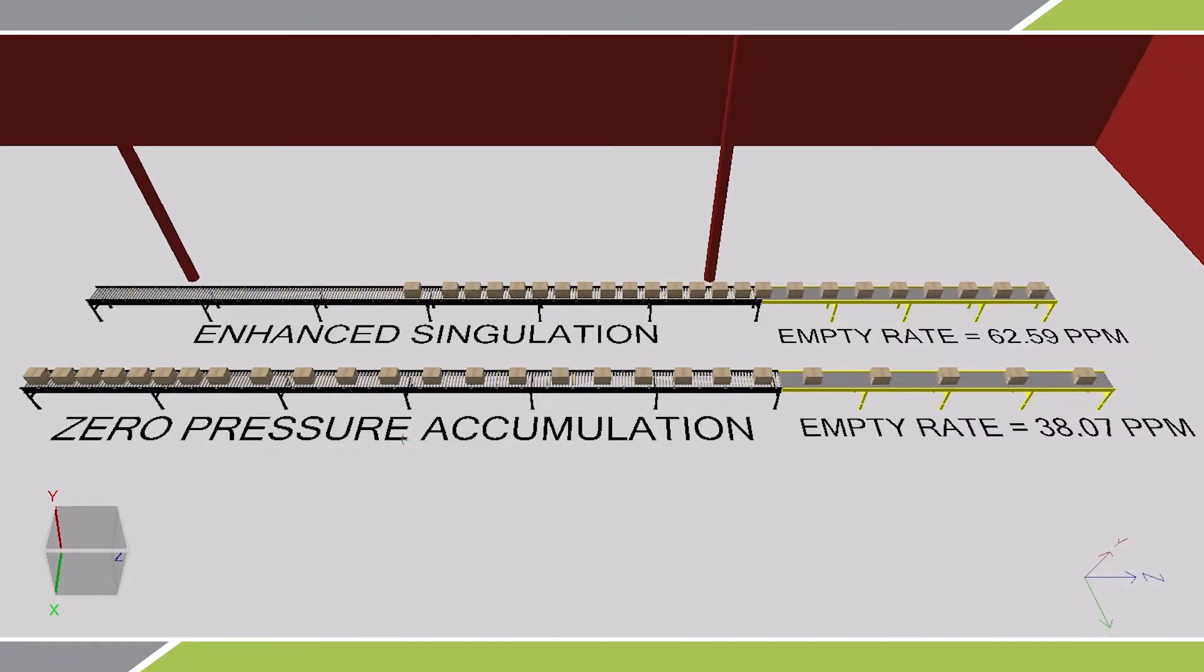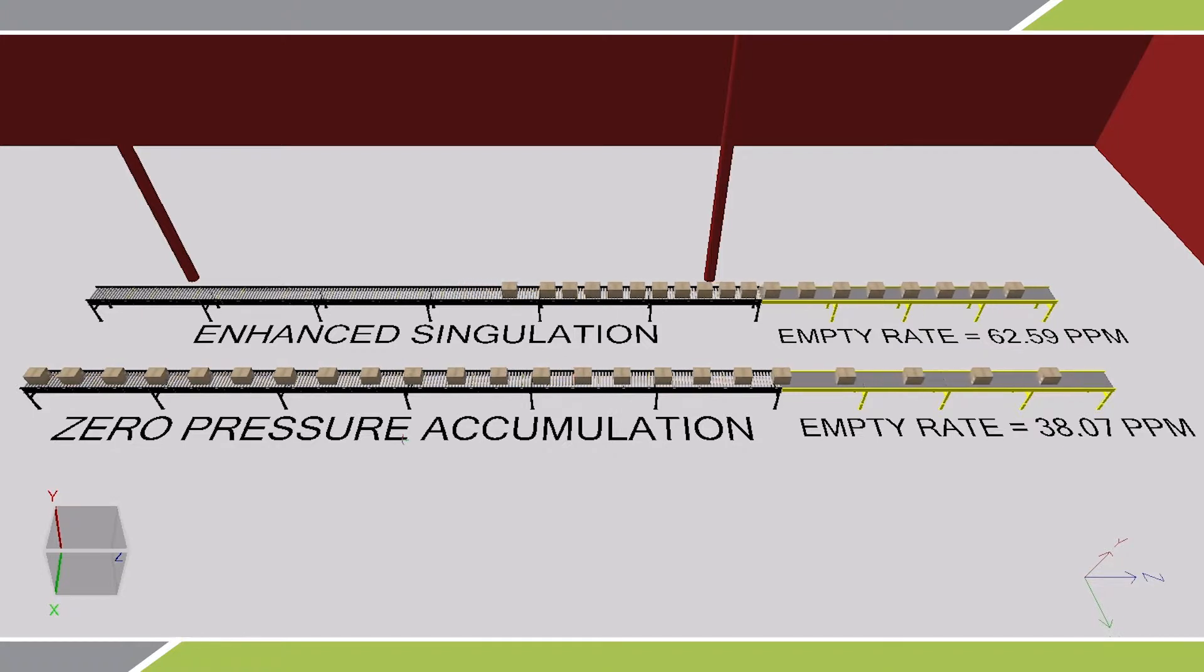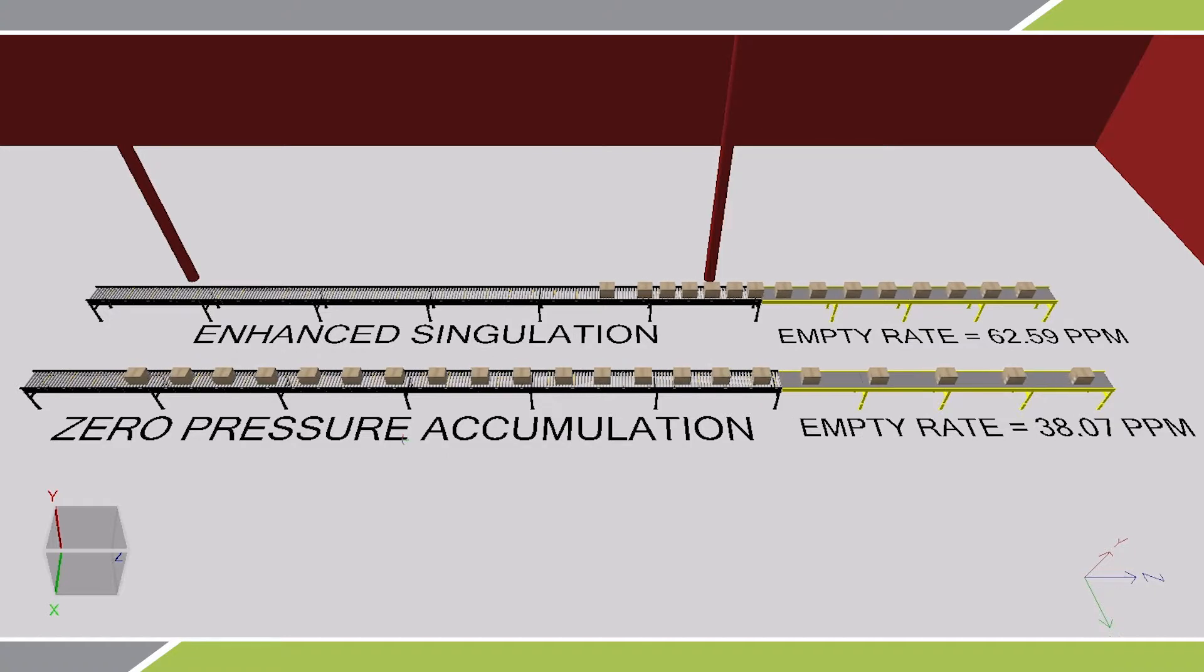Enhanced singulation offers a significantly higher throughput rate compared to ZPA running at the same speed, but has a higher likelihood of product-on-product contact. ZPA guarantees zero pressure through the system with the trade-off being a lower rate compared to enhanced singulation.